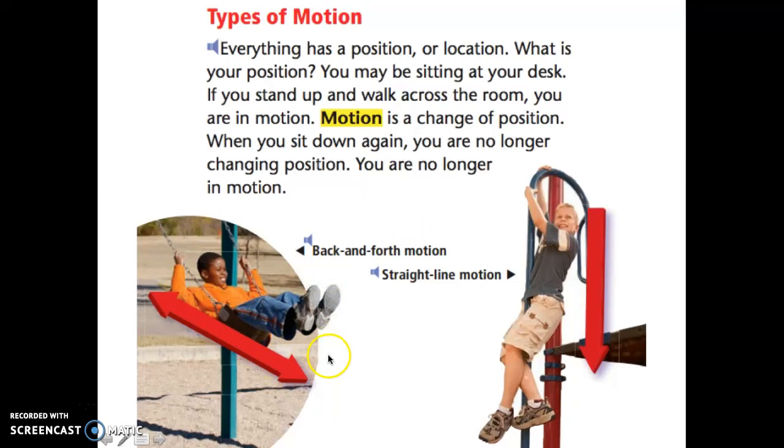When you're on a swing like this boy, you're going back and forth. That's a type of motion. If you're climbing up a pole like this boy, you're going up or down. Boys and girls, you need to remember these types of motions, because you might want to use one of these motions in the game you design for the kids at Connerton.